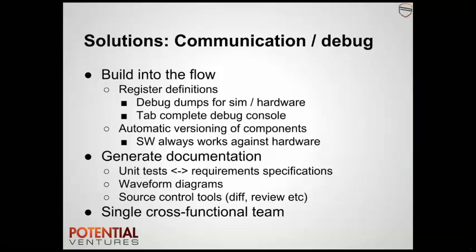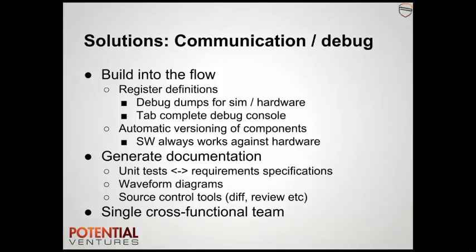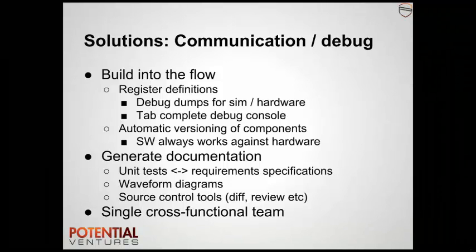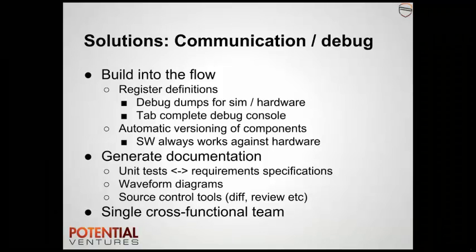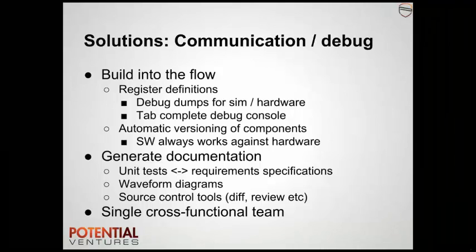We're then free to make changes — even backwards-incompatible changes — and the hardware and software will just work together. This dramatically reduces the cost of changing the interface between hardware and software, allowing us to pull out additional debug, add new features, or tweak the behaviour of the system as our understanding grows during the project. Similarly, we can build debug tools into our flow. For example, spitting out human-readable printouts of the current configuration from the hardware or the simulation will make it much faster to check that the registers are correctly configured. With the right tools, these capabilities can add zero development overhead and yet make a huge impact on our productivity.